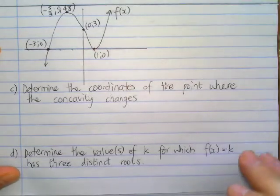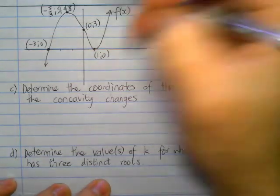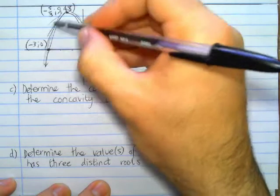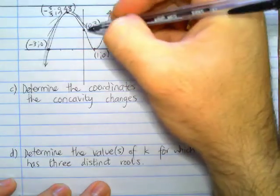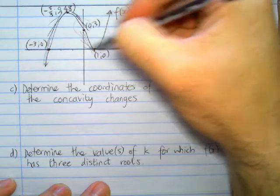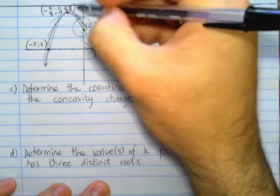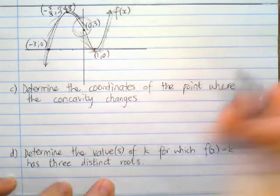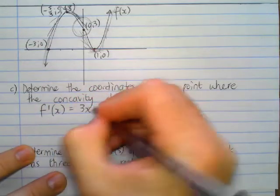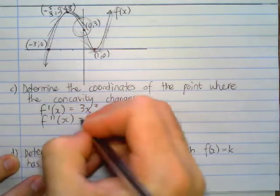Number C says the following. Determine the coordinates of the point where the concavity changes. So concavity, you remember, talks about how and where the tangents are positioned on our cubic graph. The tangents you'll see are all above the graph there and above there. But at some point here, in the middle between our two turning points, the concavity will change and your tangents will now start appearing below the function. So where exactly do the tangents decide to flip over? That comes down to the second derivative.